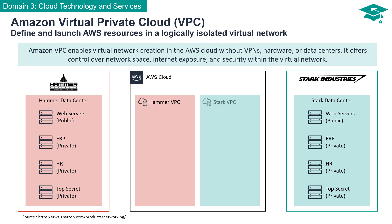One of the standout features of Amazon VPC is its ability to ensure that Stark Industries' VPC remains entirely isolated from Hammer Industries' VPC. This isolation is a fundamental pillar of AWS Cloud security, guaranteeing that resources remain secure, protected, and insulated from unauthorized access.